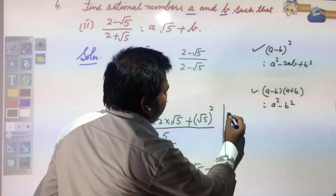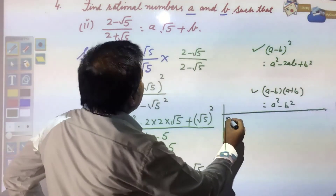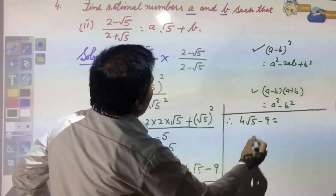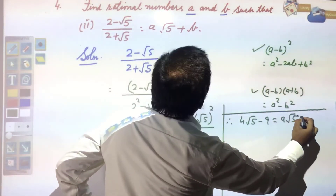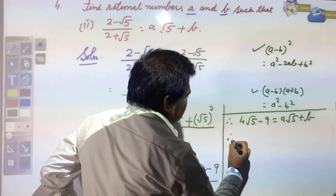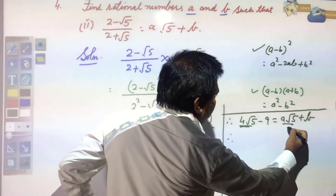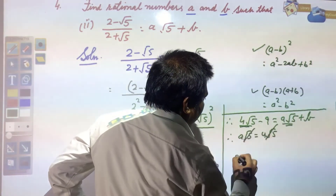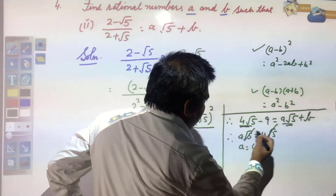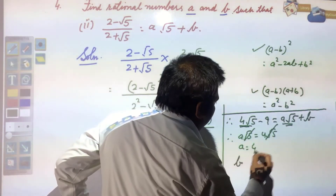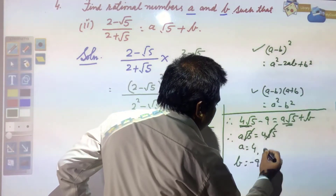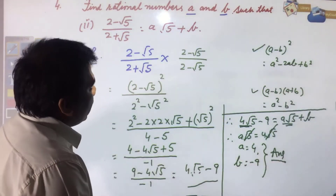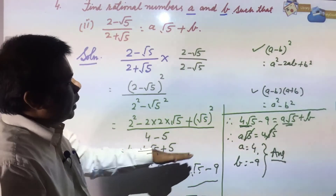Therefore, 4√5 - 9 = a√5 + b. Comparing: the term 4√5 equals a√5, so a = 4. And -9 equals b, so b = -9. This is your answer: a = 4 and b = -9. Similar questions are there — I hope you will be able to solve them.